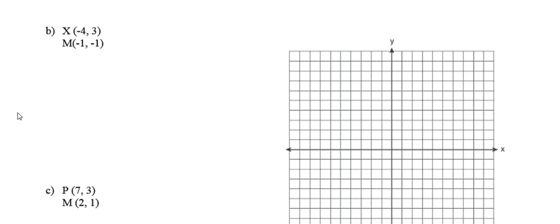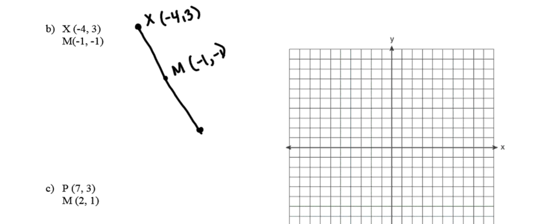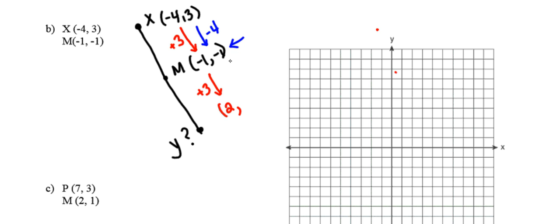Let's try another one. Letter B says the coordinates of point X are negative 4, 3 and the midpoint is negative 1, negative 1. I'll call this endpoint X, here's the midpoint at negative 1, negative 1, and I'm trying to find the other endpoint Y. Looking at the change in x-values: the change was plus 3. To keep the midpoint in the middle, this change also needs to be plus 3, so negative 1 plus 3 gives me 2. For the y-values, the change was minus 4, so another minus 4 gives me negative 5. The coordinates of the other endpoint are (2, negative 5).